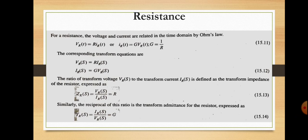First, let us consider the resistance. In the case of resistance, we are going to draw a circuit which contains impedance and admittance. For a resistor, the voltage and current equations are related by Ohm's law. We can write the voltage equation as Vr(t) = R × ir(t), where voltages and current are represented in the time domain, meaning they vary with the parameter time.